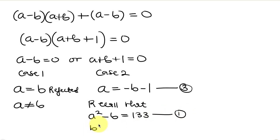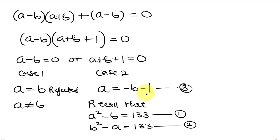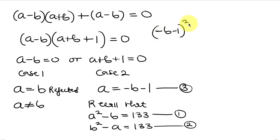We're going to substitute a, which is minus b minus 1, into equation 1. That means wherever we see a, we put minus b minus 1. So a squared becomes negative b minus 1 all squared, then minus b equals 133.